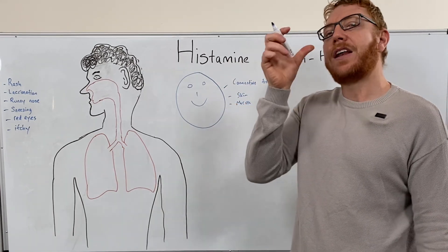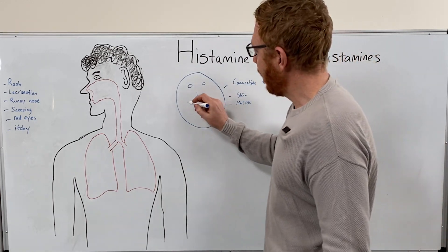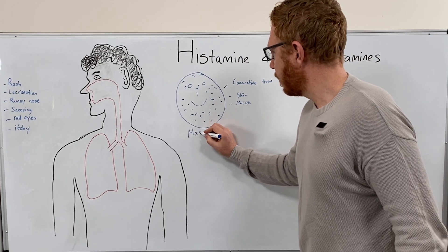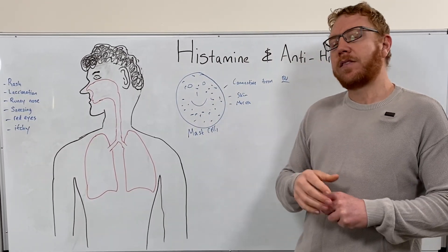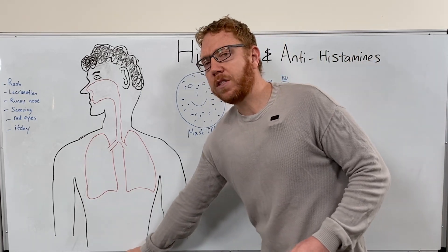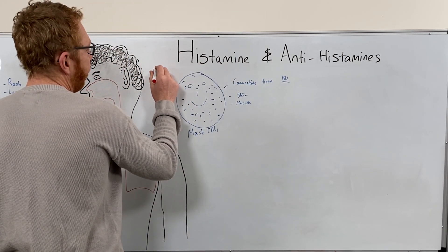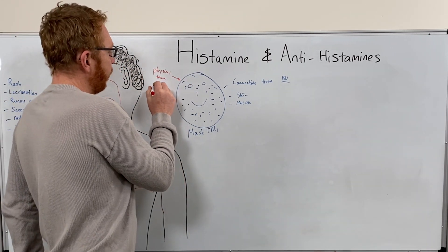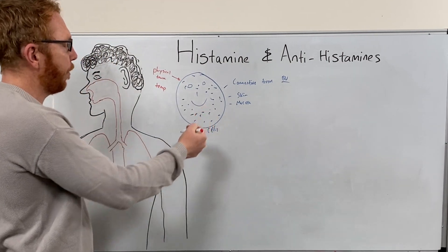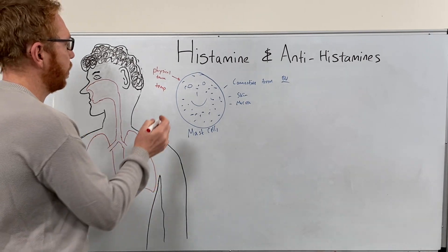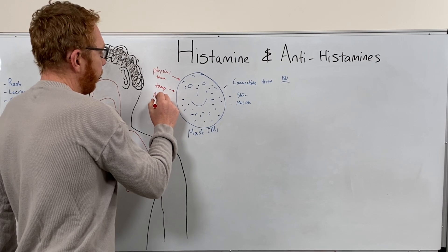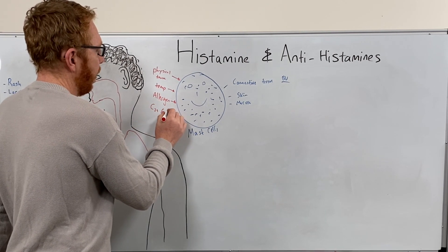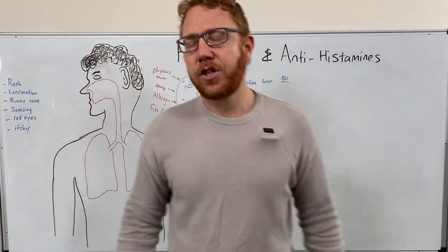Mast cells convert the amino acid histidine through an enzyme and fill themselves with histamine stored in granules. When mast cells release their histamine, because it's in granules, it's called degranulation. What causes this release? Physical trauma or injury is one trigger. Temperature is another — a very cold temperature can cause histamine release. Allergens are the most important trigger. Certain immune proteins like complement proteins C3a and C5a can also induce mast cell degranulation.